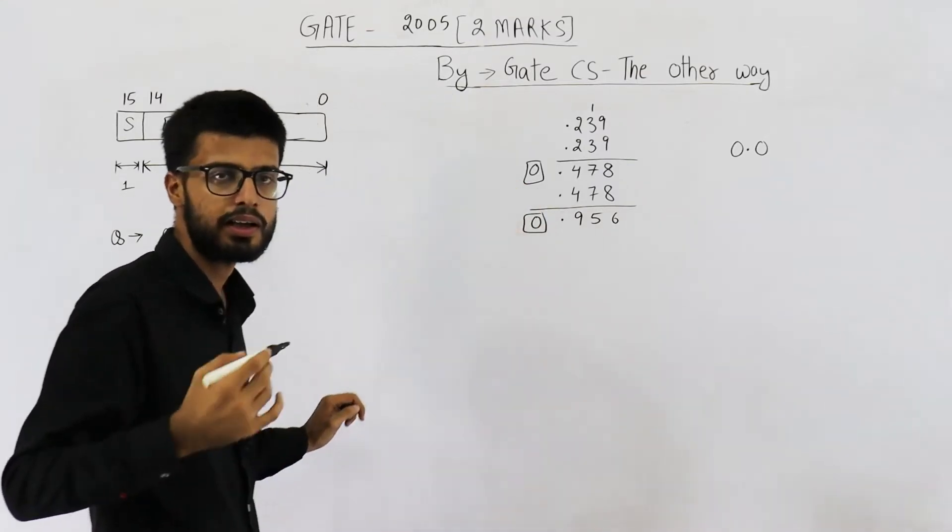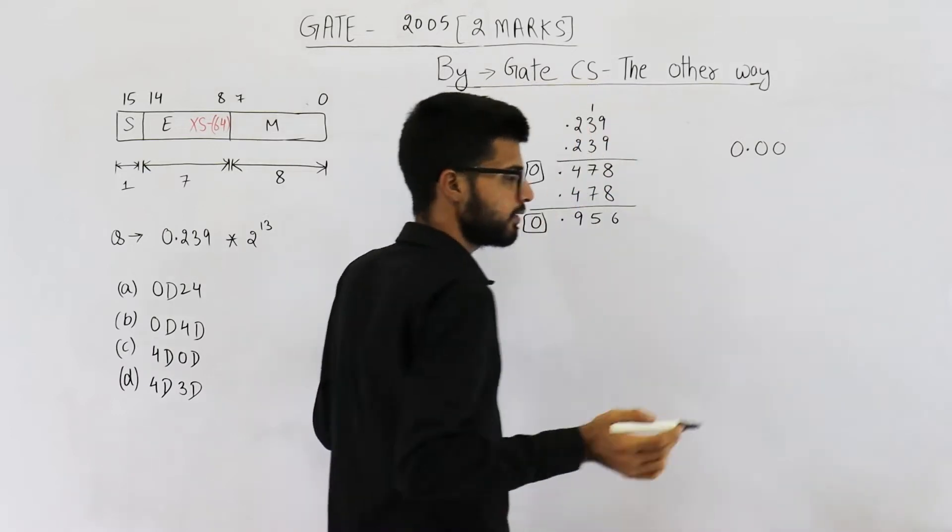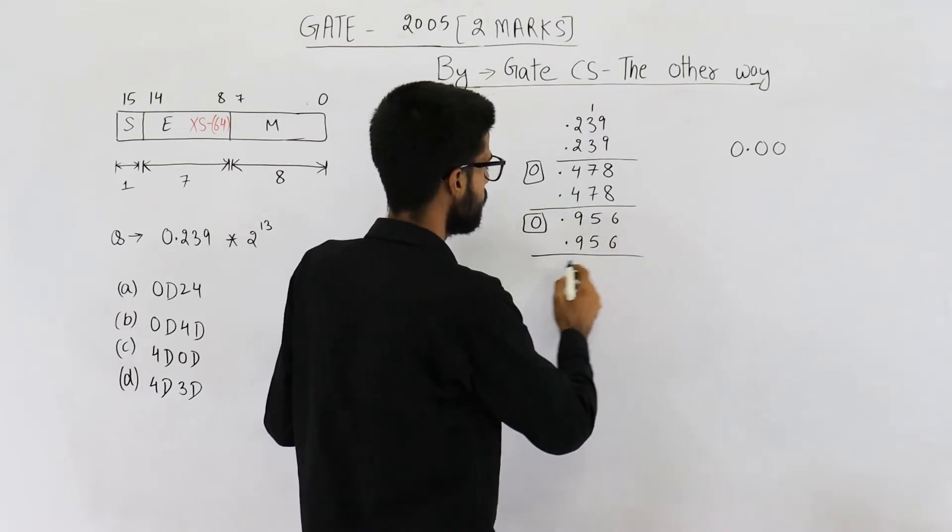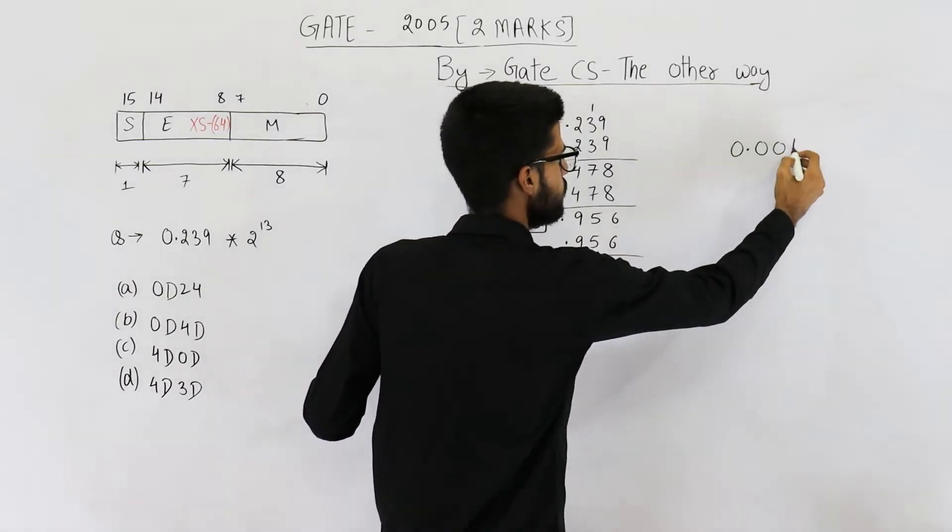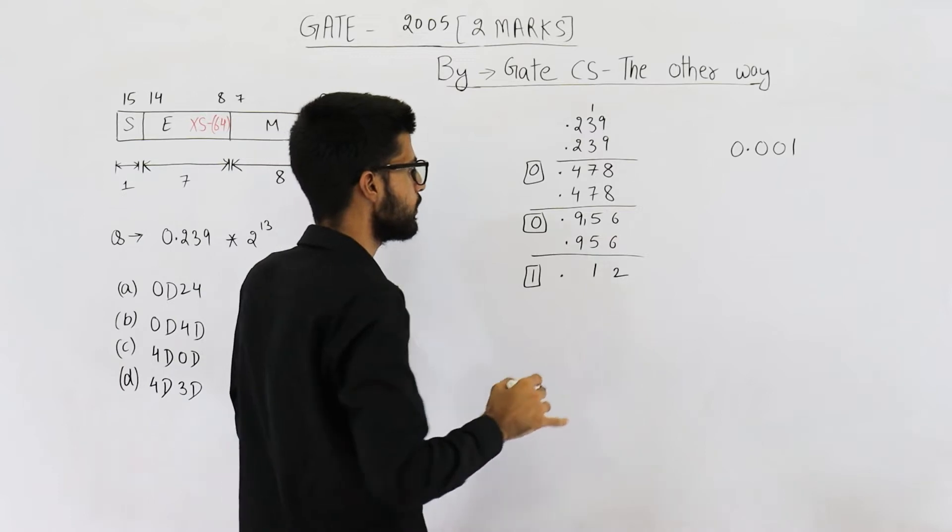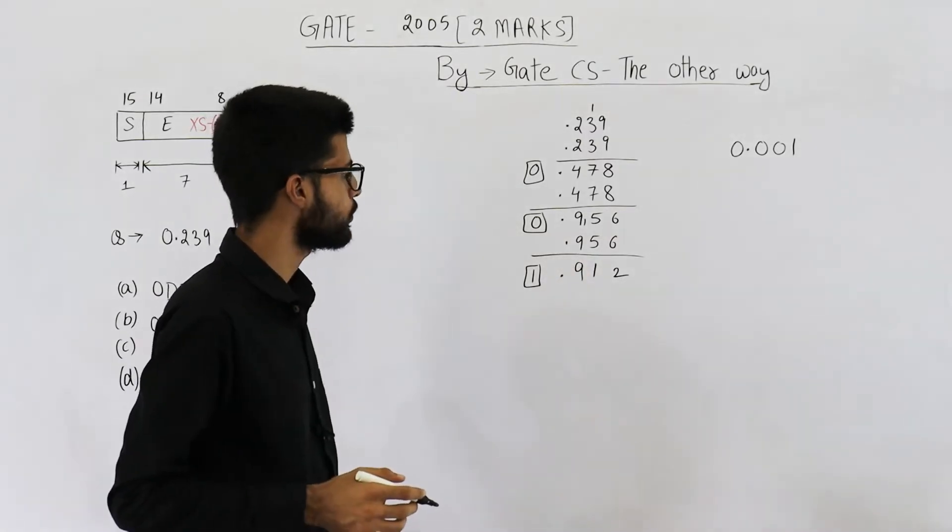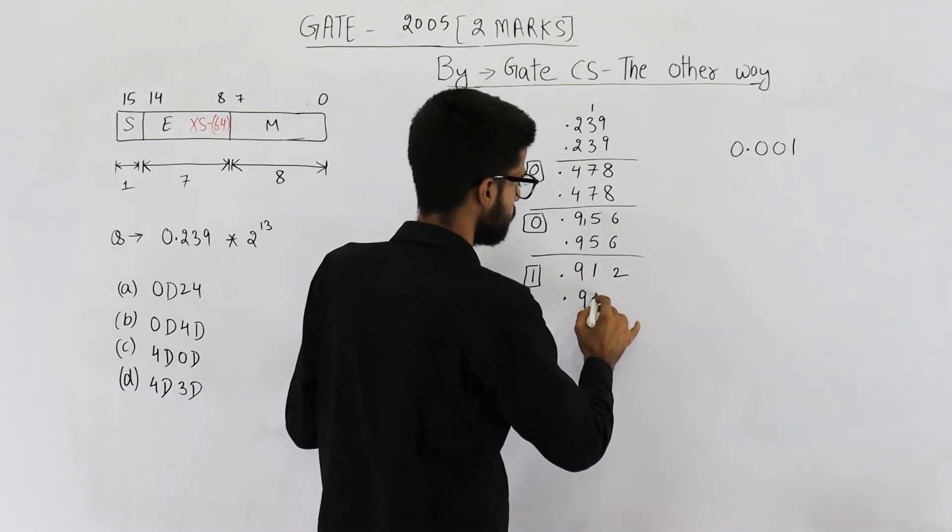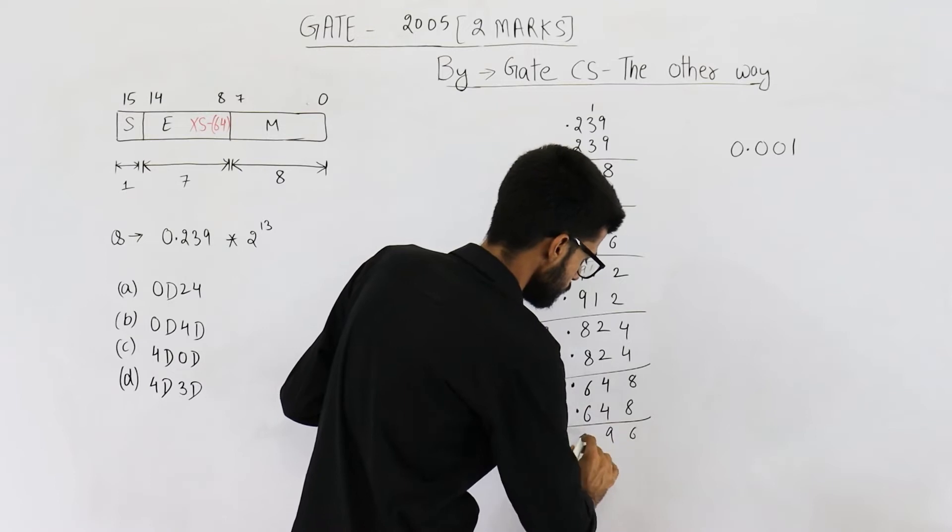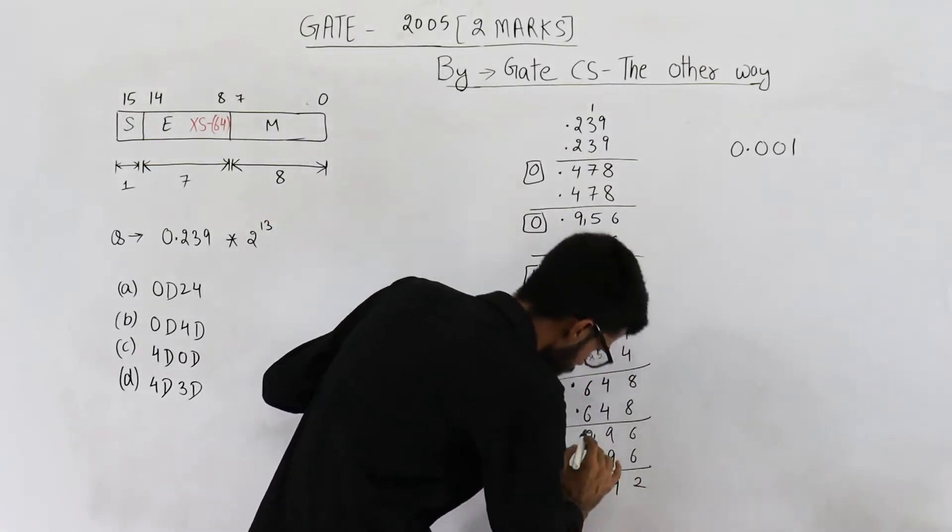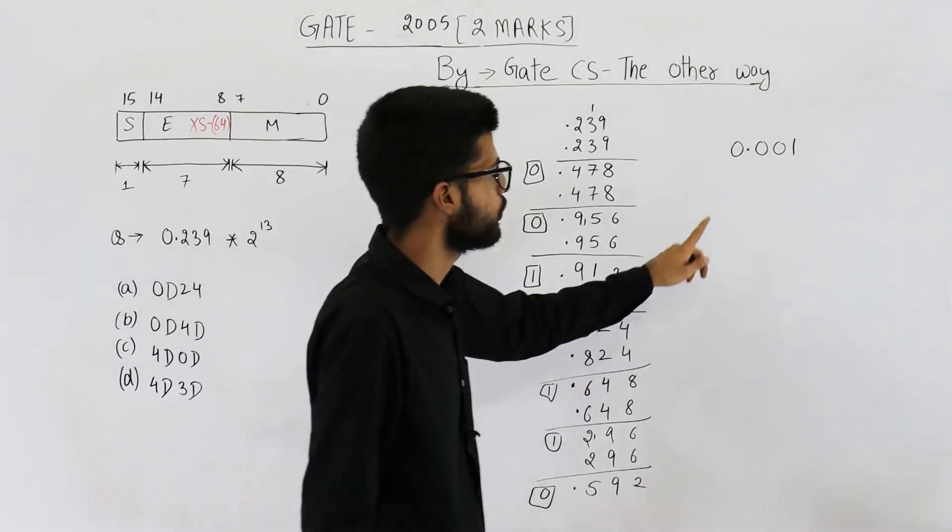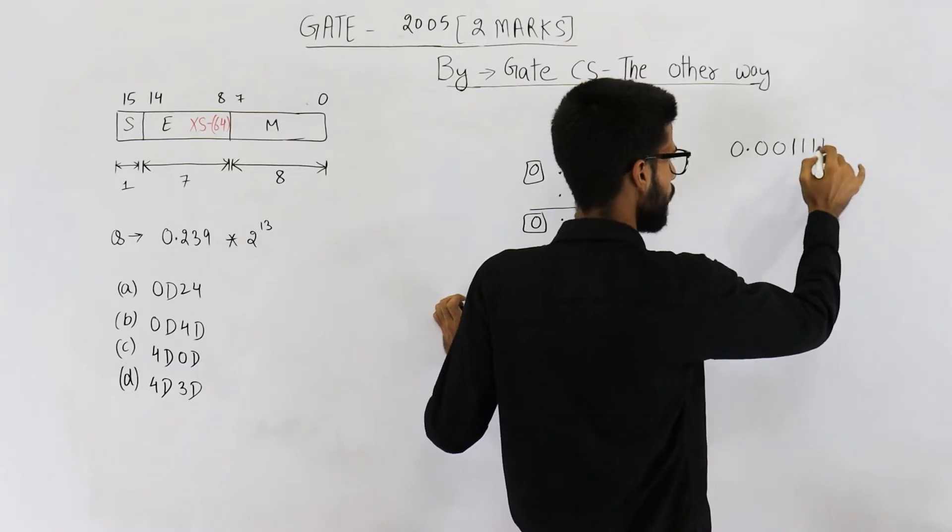Now let us again add 0.478. 8 plus 8 is 16, 7 plus 7 is 14 and 1 is 15, 4 plus 4 is 8 and 1 is 9. So again second bit after decimal point is 0. Now again add 0.956. You will get 1 point something. So next bit will be 1. So 6 plus 6 is 12. This will be 1 and 9 plus 9 is 18 plus 1 is 19.